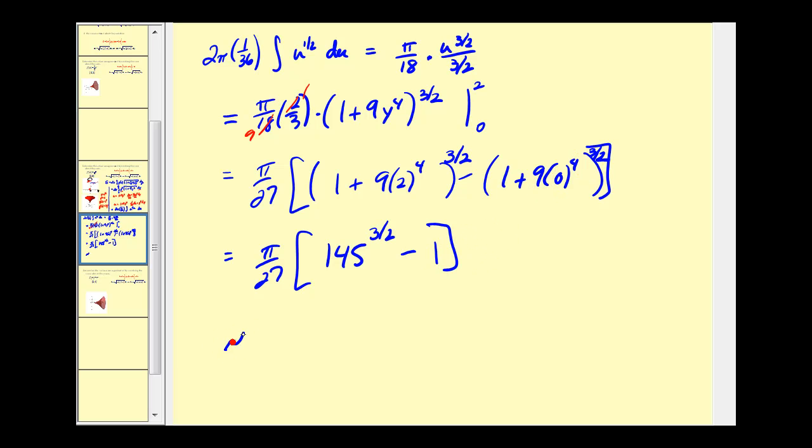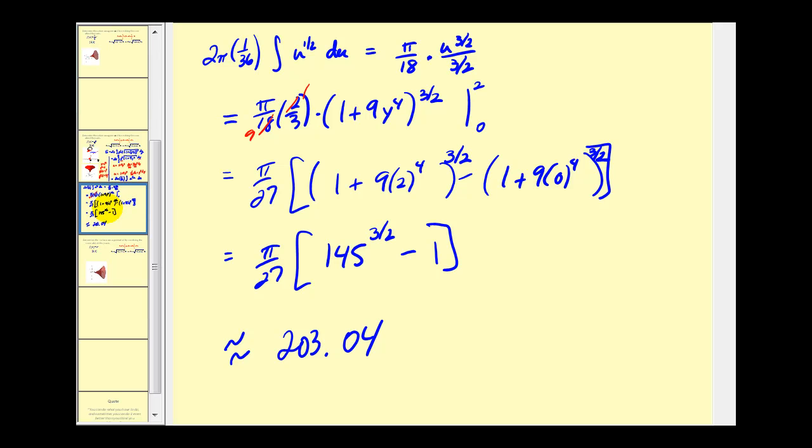I'll leave it as π/27[145^(3/2) - 1], but let's get a decimal approximation. That's approximately 203.04 square units for surface area. And that's going to do it for this example. I hope you found it helpful.